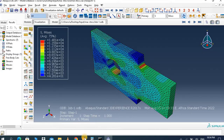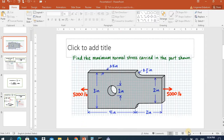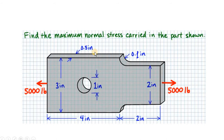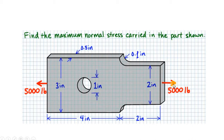Let me show the problem description here. Find the maximum normal stress carried in this part. We are given the dimensions and the load is applied in this direction. You can keep this as an encastre or a fixed part. A 5000 pound force is applied towards the right. We will find where the maximum stress is and how much it is.